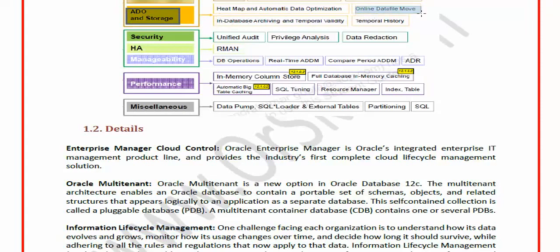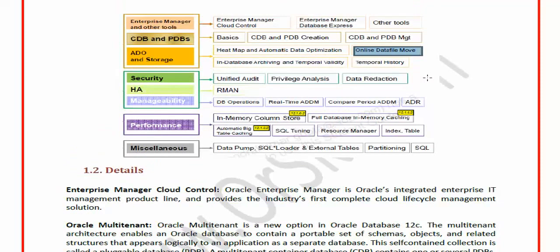Online data file movement is another new feature in 12c. Previously, to move a data file from one mount point to another, you'd offline the data file, copy or move it, then issue 'ALTER DATABASE RENAME FILE' in SQL*Plus, and bring it back online — meaning the data file could be inaccessible to users for 15 minutes to an hour. In 12c, you can do this online: while the data file copy is in progress, it remains online and users can still access it. That is covered in this course.